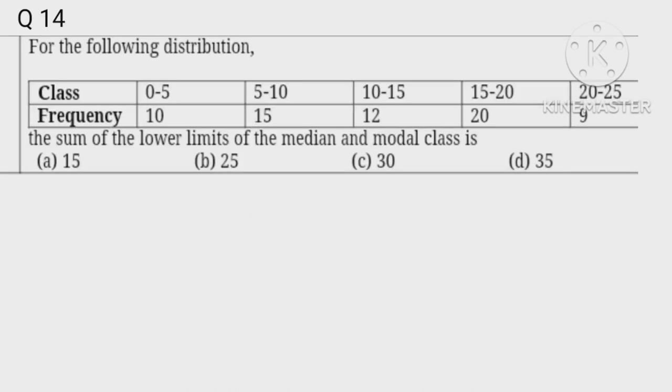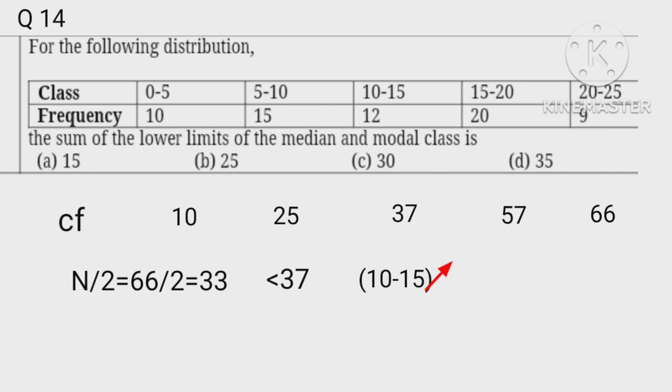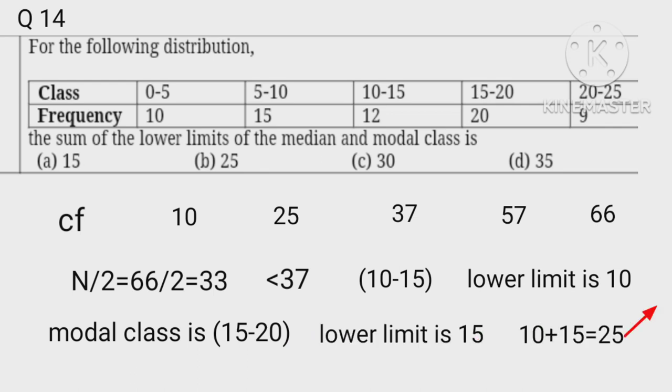Writing down the cumulative frequency: 10, 25, 37, 57, 66. For median, N upon 2 equals 66 upon 2 equals 33, which is less than 37. Hence the median class is 10 to 15 with lower limit 10. The class having maximum frequency is the modal class, which is 15 to 20 with lower limit 15. Sum of lower limits is 10 plus 15 equals 25.